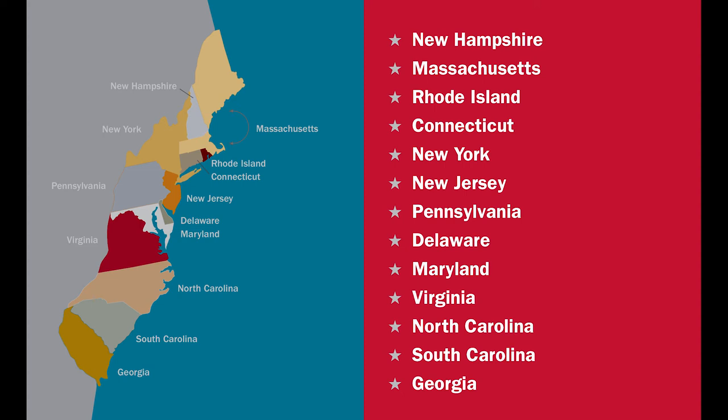There were 13 original states. Name three: New Hampshire, Massachusetts, Rhode Island, Connecticut, New York, New Jersey, Pennsylvania, Delaware, Maryland, Virginia, North Carolina, South Carolina, Georgia.